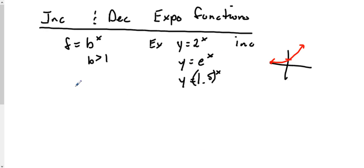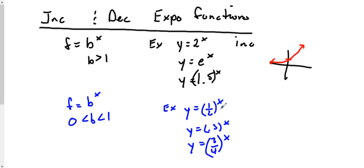Now if you have a function where the base is x and the base is less than 1 but greater than 0, examples of these would be like y equals 1 half to the x, y equals 0.3 to the x, y equals 3 fourths to the x. Anything where the base is less than 1 greater than 0, you have an exponential.